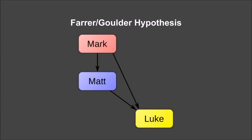The most popular alternative is the so-called Farrer hypothesis, spearheaded by Austin Farrer in the mid-20th century and in modern times by Mark Goodacre. This hypothesis agrees with the two-source hypothesis on the priority of Mark, as well as Matthew and Luke's use of Mark, but it dispenses with the hypothetical Q document. Instead, it explains the material common to Matthew and Luke by recourse to Luke utilizing Matthew.